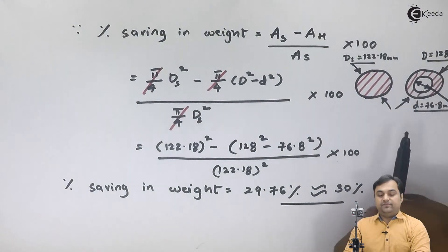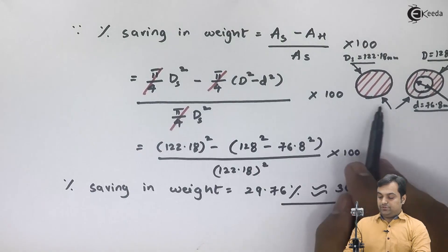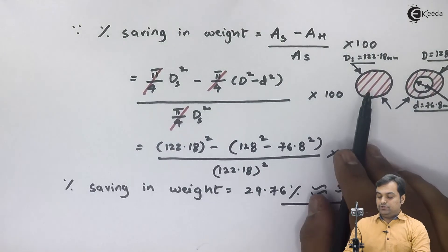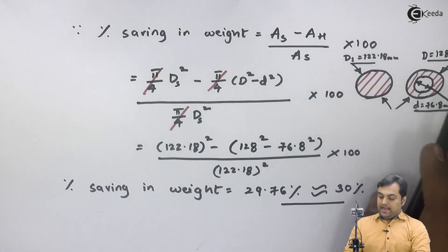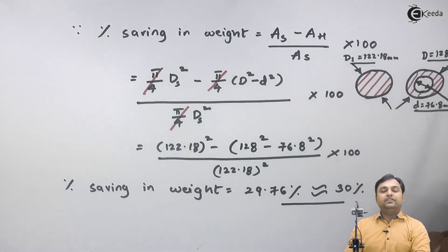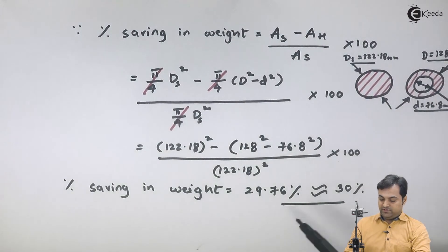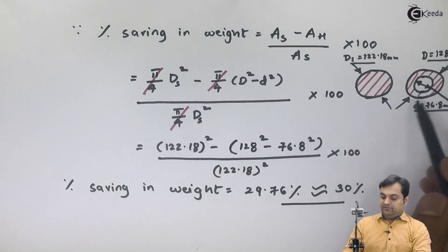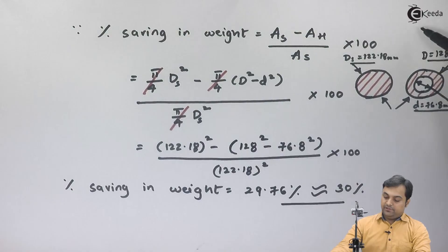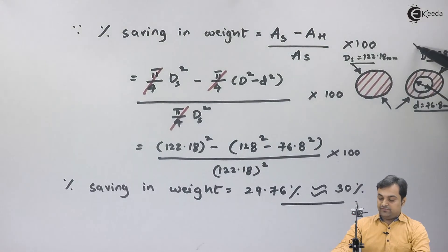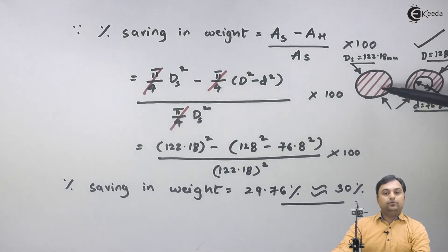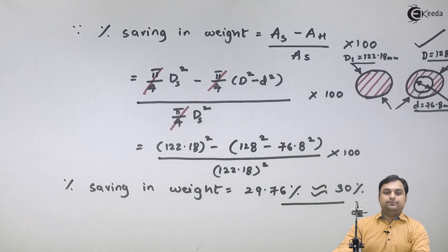I have drawn the cross sections of both the solid and hollow shaft. As we have seen, the percentage reduction in weight by using hollow shaft is 30 percent, so we would prefer the hollow shaft cross section over the solid shaft. With this we complete the question.